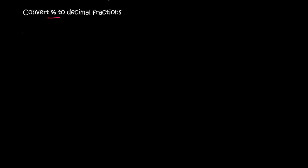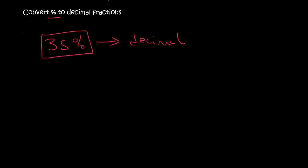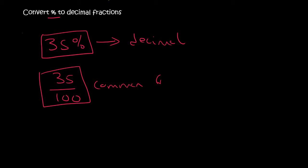Hi guys, so by now you should be feeling pretty confident with decimal fractions and common fractions. Now we need to talk about percentages. We need to be able to convert something like 35% to a decimal. All you do is the following: when you have a percentage, to get rid of the percentage sign, you write the number over 100. That is called a common fraction.